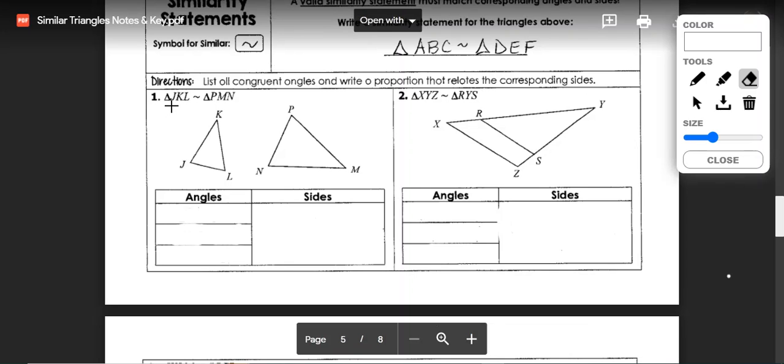Let's take a look at listing all of the congruent angles and writing a proportion that relates the corresponding sides. Here we've been given the information that JKL is similar to triangle PMN.